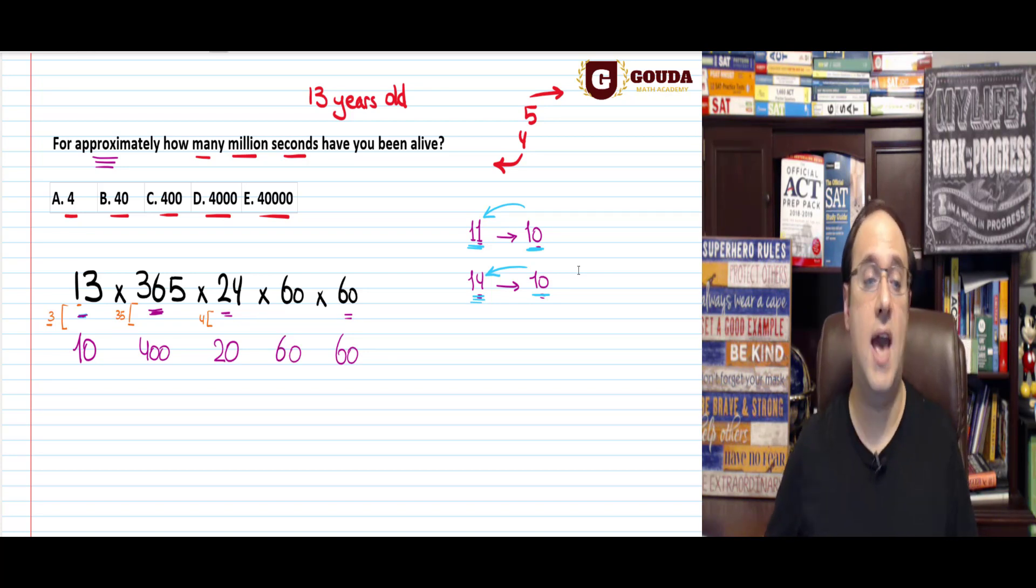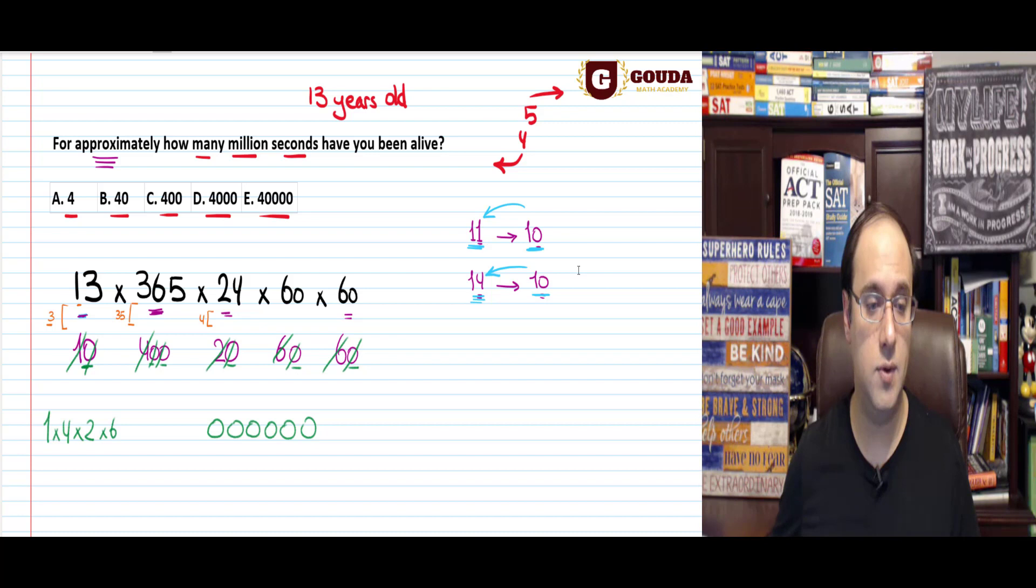And instead, I left the 60s as they are. Now let's multiply. The easy way, the fast way to do this: you first put all the zeros you have. So 1, 2, 3, 4, 5, 6 zeros. Cross them out so you don't forget. Now, you do 1 times 4, that's 1 times 4, times 2, times 6, times 6 again. And you add whatever you get here. You just put it next to the zeros.